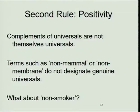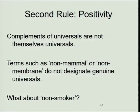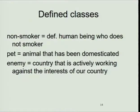The second rule is positivity: there are no negative universals. There is a universal mammal, but there is no universal non-mammal. There is a universal violin, but there is no universal non-violin. Non-smoker is not the name of a universal. A non-smoker is like a cardiologist — it's the name of something about human beings. A non-smoker is a human being who happens to have the attribute that he or she doesn't smoke, roughly speaking.